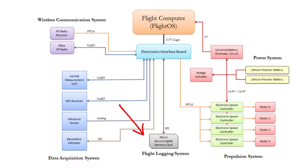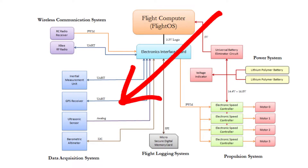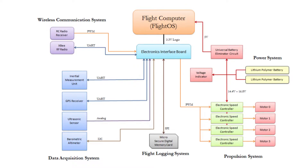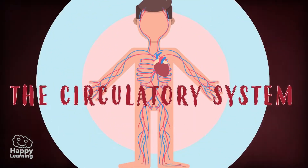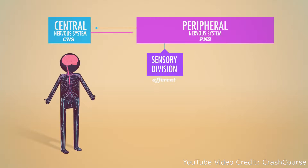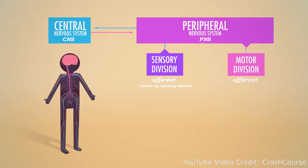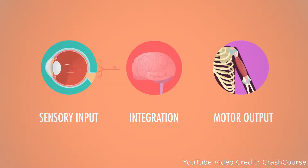Then we have the data acquisition system — basically just a bunch of sensors that help our drone fly. And then we have the wireless communication system, which is very important because this is how you're actually going to command your drone. As you can see, everything is connected to the flight computer, just like our body and the brain. In the human body, we have blood vessels that travel to all the different organs. On top of that, we have the nervous system, which is how our brain sends messages across the body — taking what our body sends and relaying that data back to the brain.